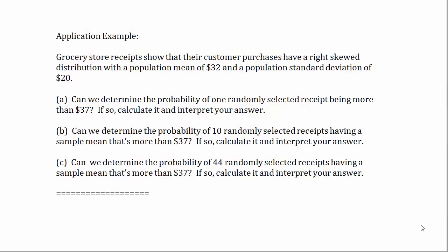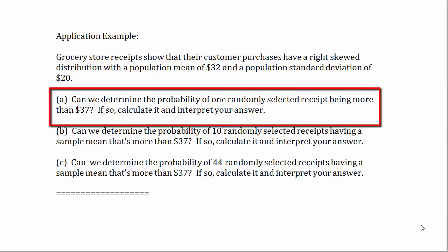Grocery store receipts show that customer purchases have a right-skewed distribution with a population mean of $32 and a population standard deviation of $20. The first question asks: can we determine the probability of one randomly selected receipt being more than $37? If so, calculate it and interpret your answer.